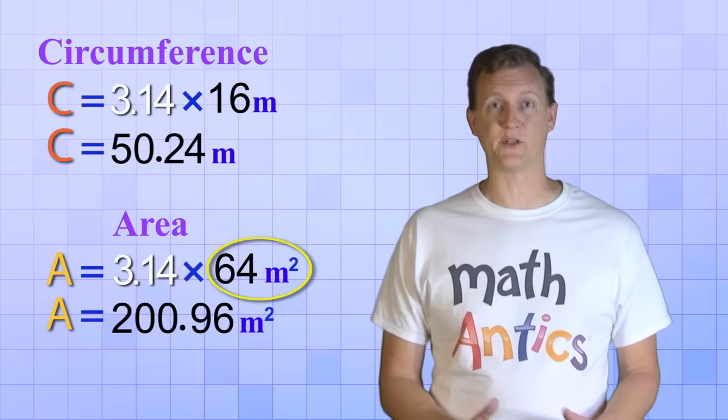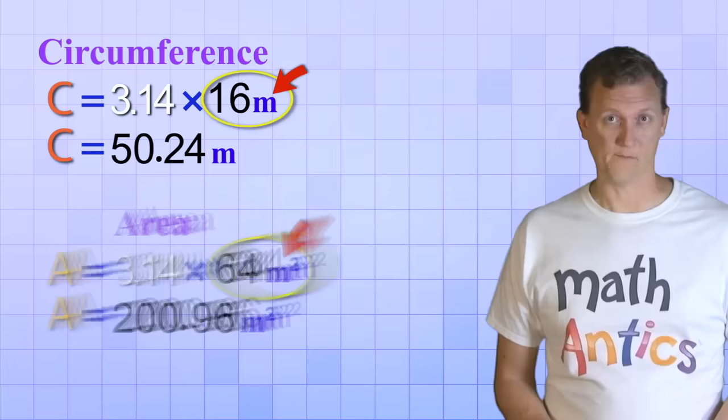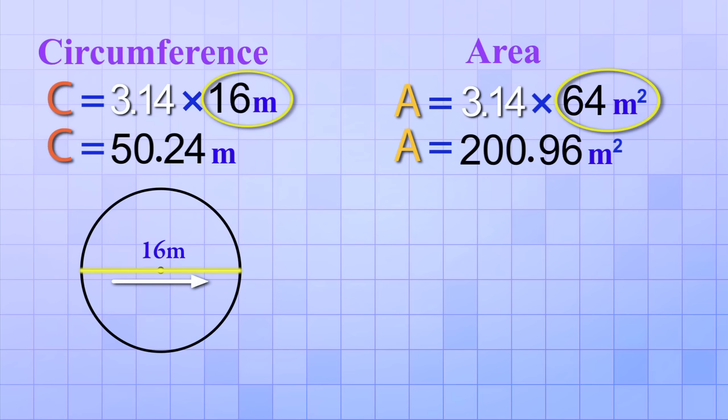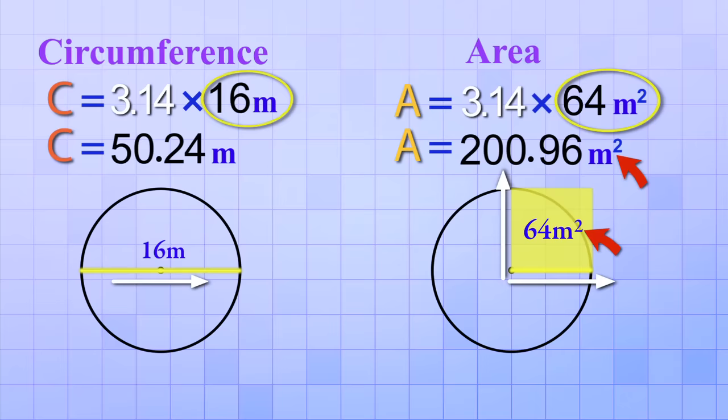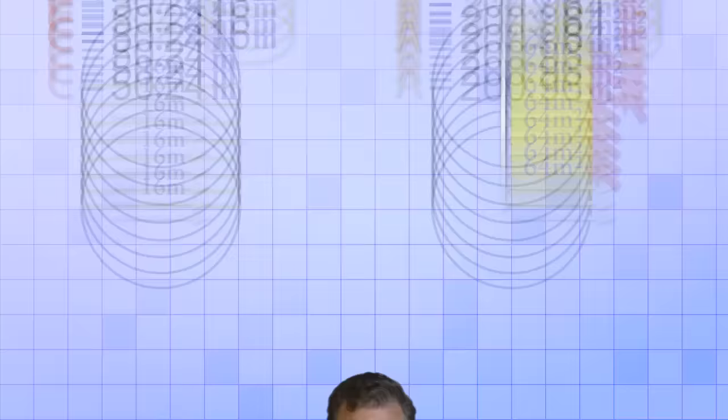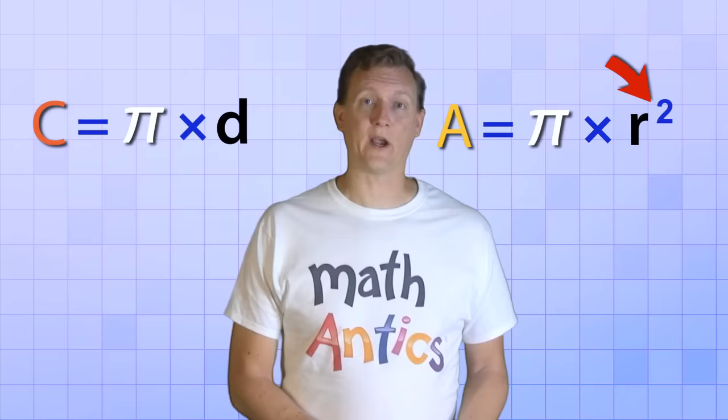As you can see, the result we get when we square the radius is very different from the result we get when we double it. And one of the most important differences is with the units of our answer. Doubling the radius just gives us the diameter, which is a one-dimensional quantity. So the answer we get from our formula for circumference is also a one-dimensional quantity. But when we square the radius, that gives us square units, which are two-dimensional. That makes sense because area is always a two-dimensional quantity. Remembering that will help you avoid getting these two formulas mixed up. The one that has the radius squared is always for area.